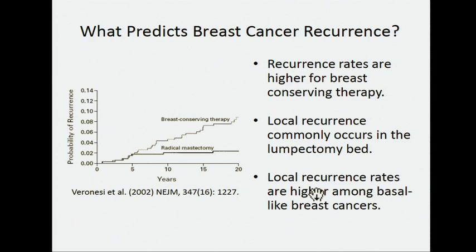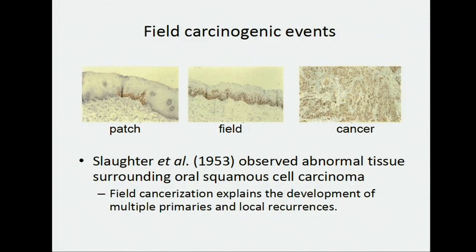To try to understand this better, my research group has been doing some work looking at field effects and stromal microenvironment surrounding tumor. The TCGA had done extensive characterization of many different data types in that adjacent normal tissue, and I'm going to talk about that today. But to start out, I think it's important to have a clear definition of what we mean by a field effect or field carcinogenic effect. This visual really nicely shows what we're thinking about when we consider field effects.